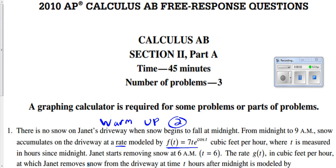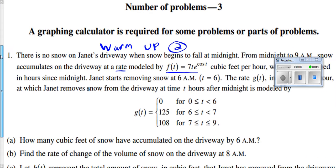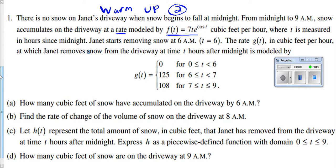Okay, so we are trying to do the problem of Janet's infamous driveway and it's been snowing. Snowing starts at midnight. From midnight to nine it tells you how the snow is falling. It's falling at the rate of 7te^(cos t). When they say the word rate you are thinking derivative. So this underlined in blue is a derivative. It's falling at a rate of cubic feet per hour. If you integrate cubic feet per hour you get cubic feet of snow.